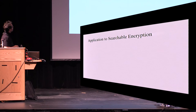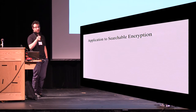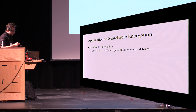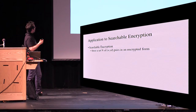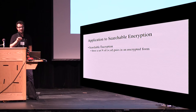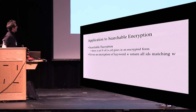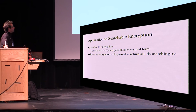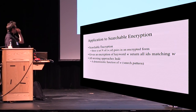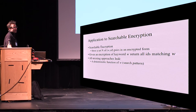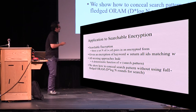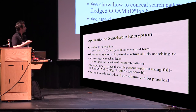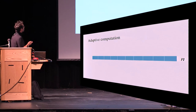Let's talk about the application of this non-interactive ORAM to searchable encryption. In searchable encryption, we store a set of n (W, ID) pairs in encrypted form. Given an encryption of keyword W, we want to return all IDs matching W. All existing approaches leak a deterministic function of W called the search pattern. We show how to eliminate the search pattern without using fully-fledged ORAM — mainly D times log n rounds for search — using just four rounds instead, and our scheme can be potentially practical.